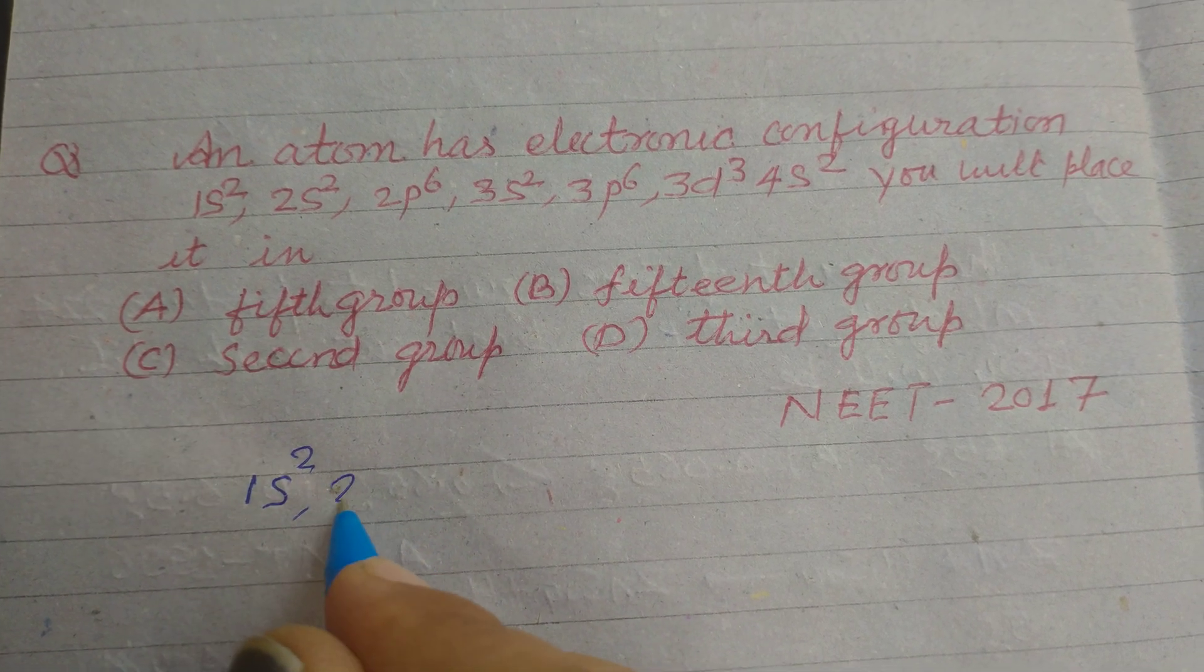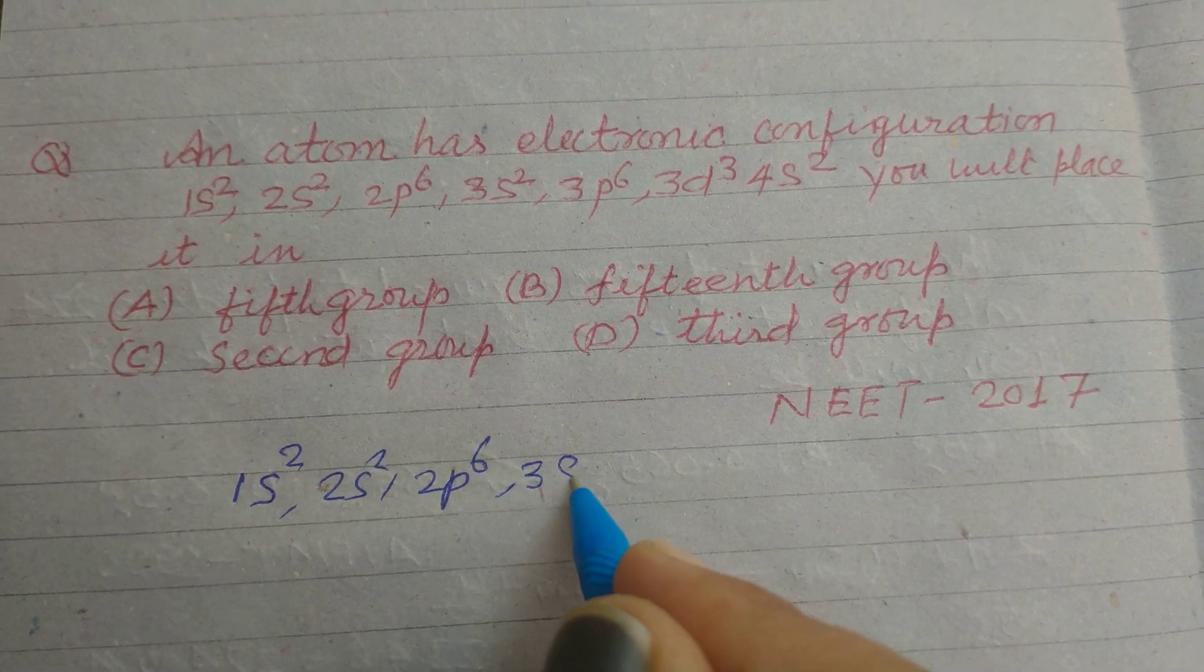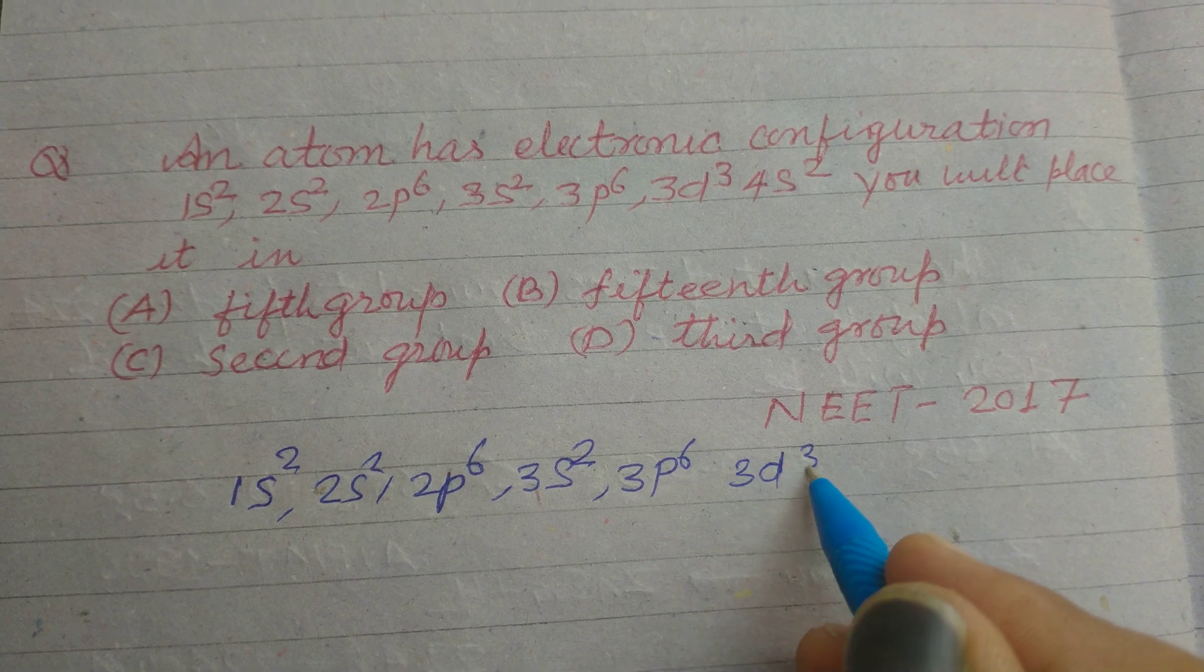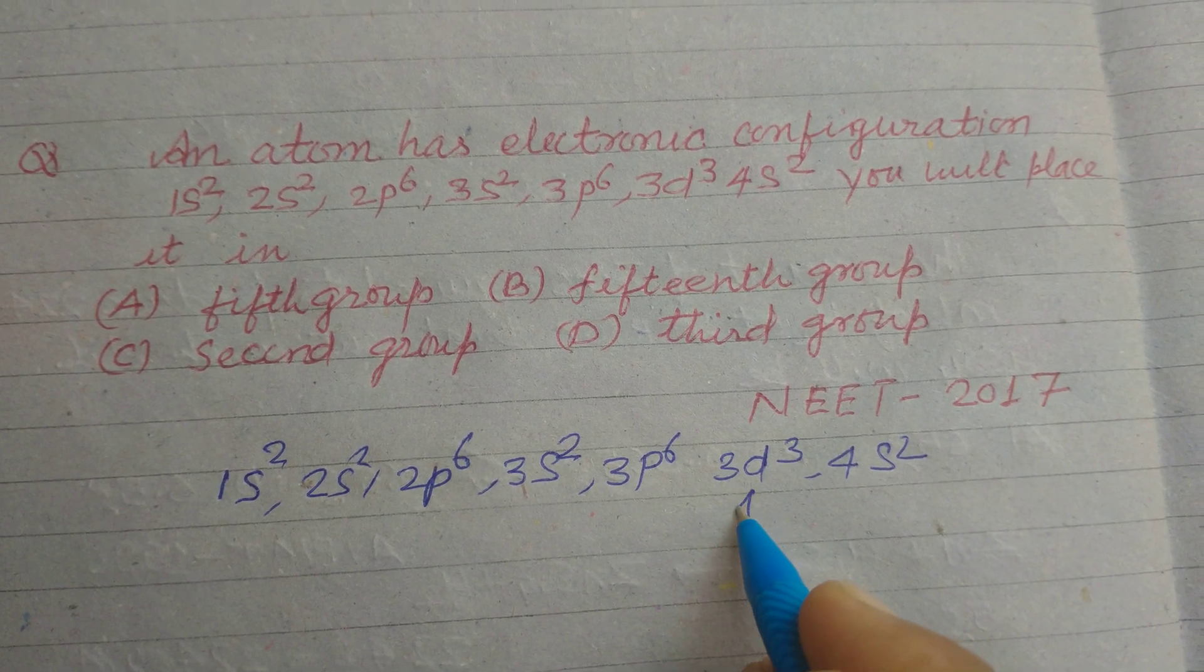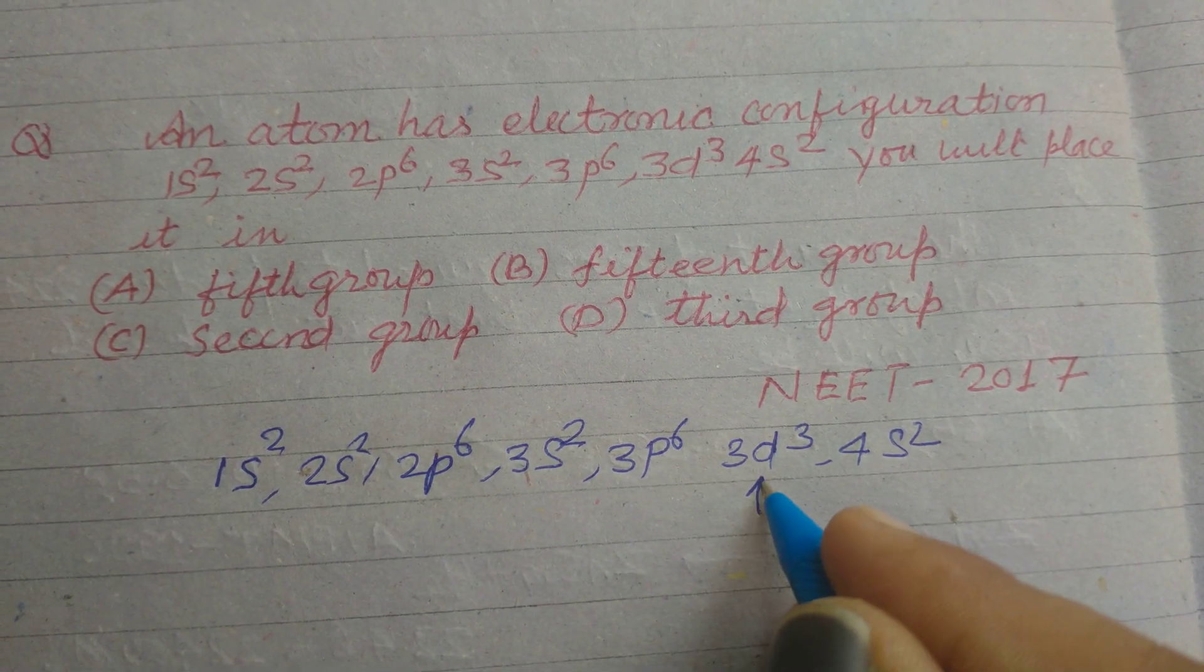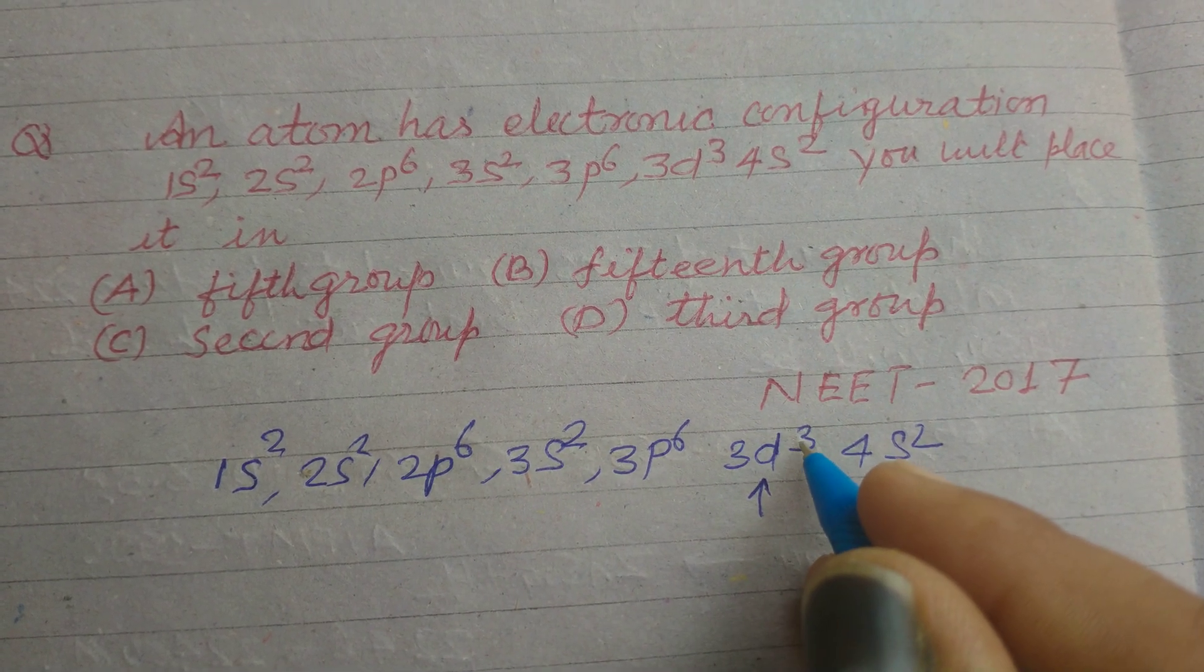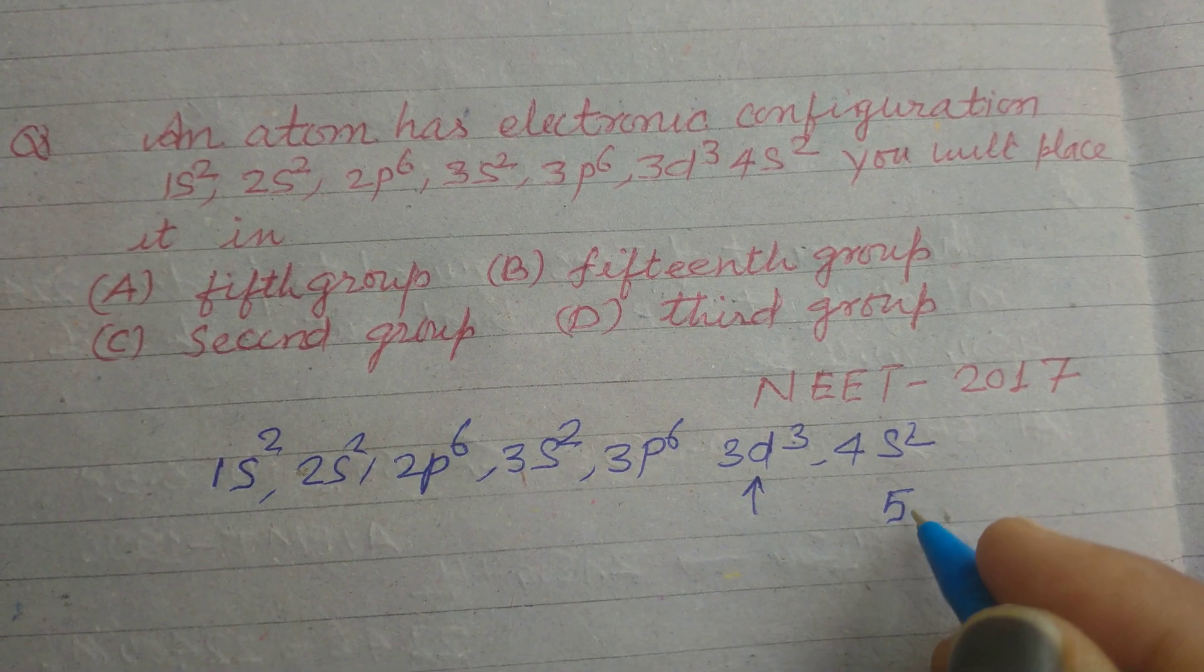1s2 2s2 2p6 3s2 3p6 3d3 and 4s2. So the last electron is entering in d orbital, so it is an element of d group. And 3 plus 2, this number of electrons in outermost orbit is 5.